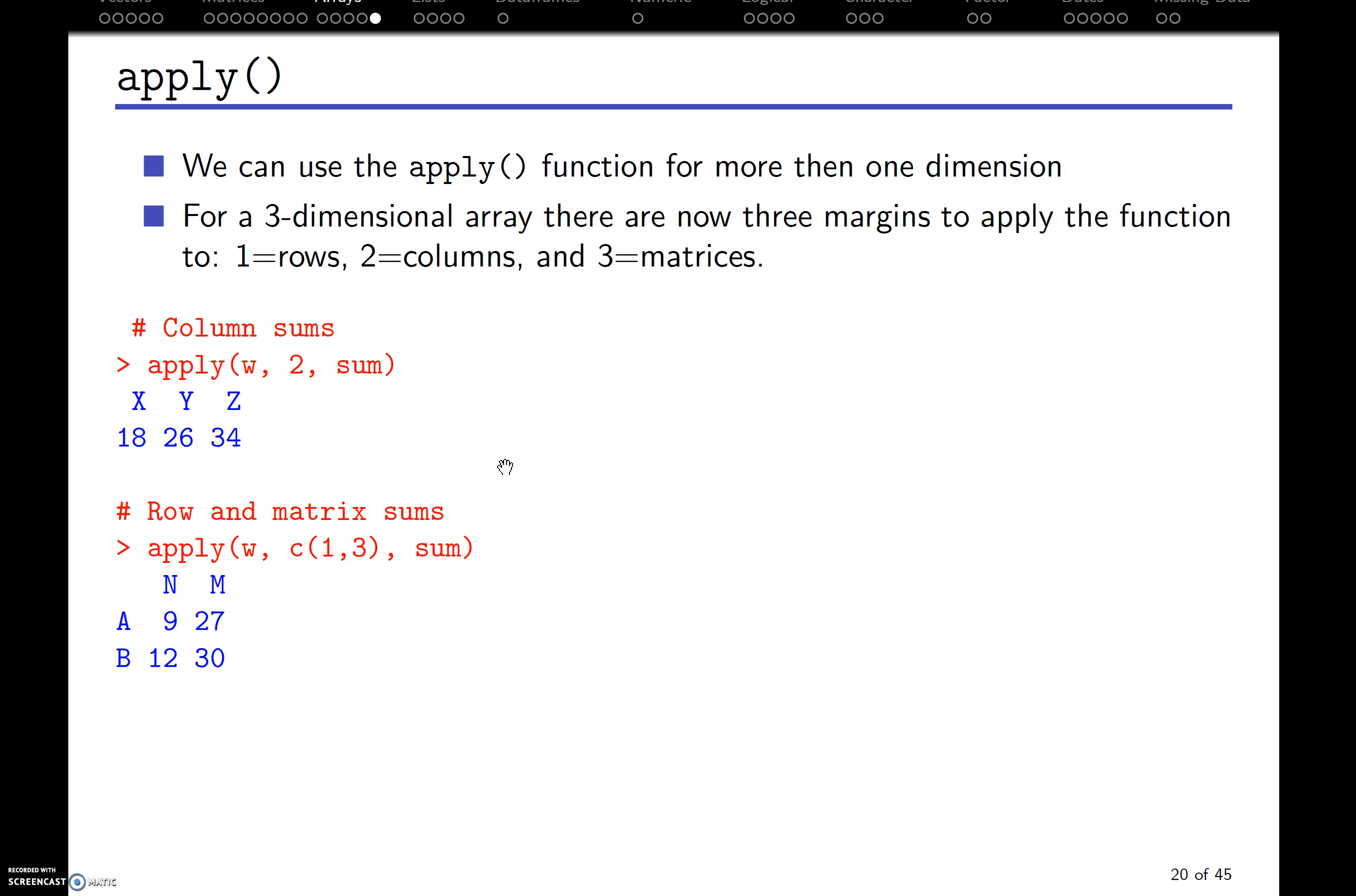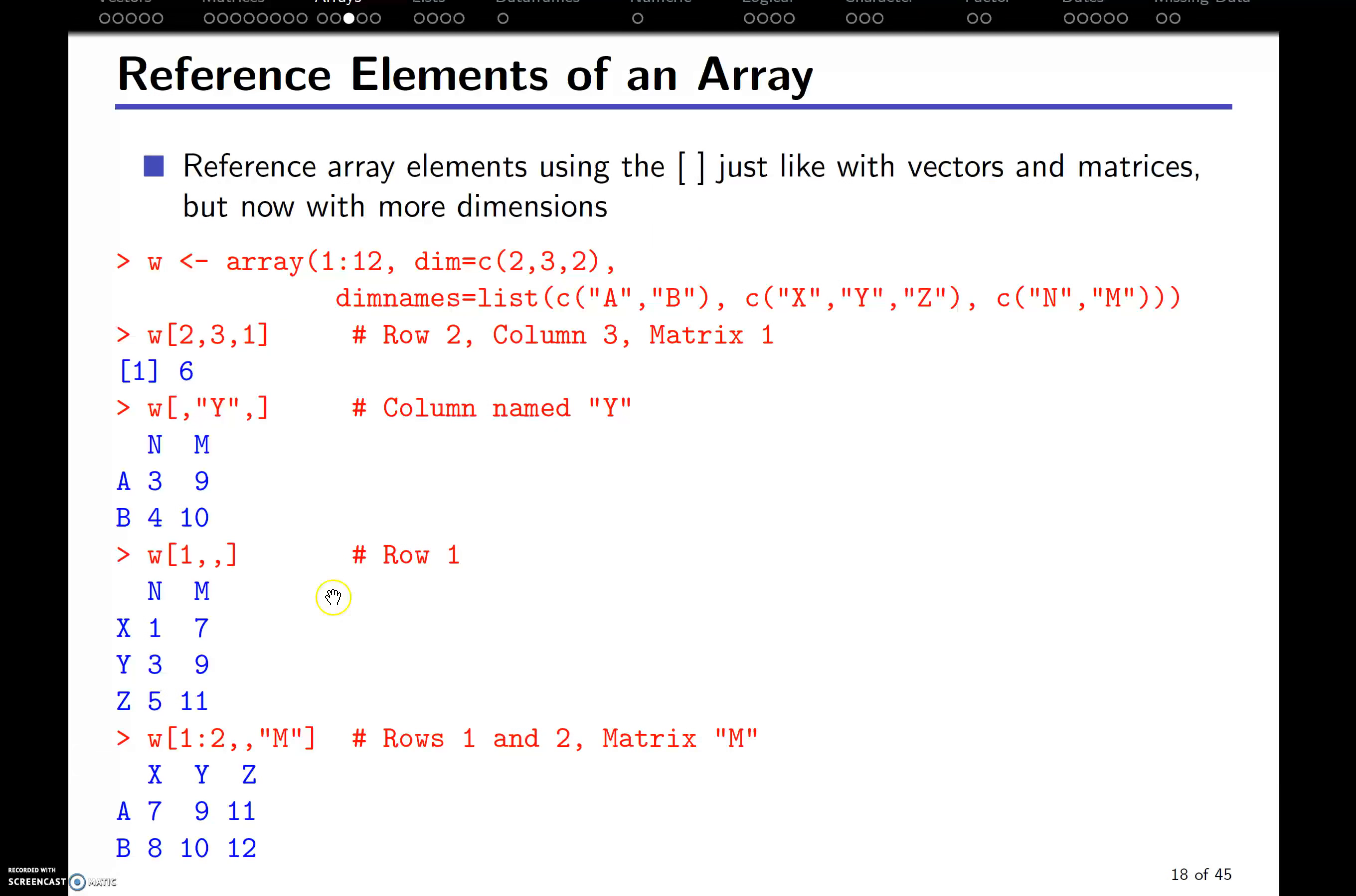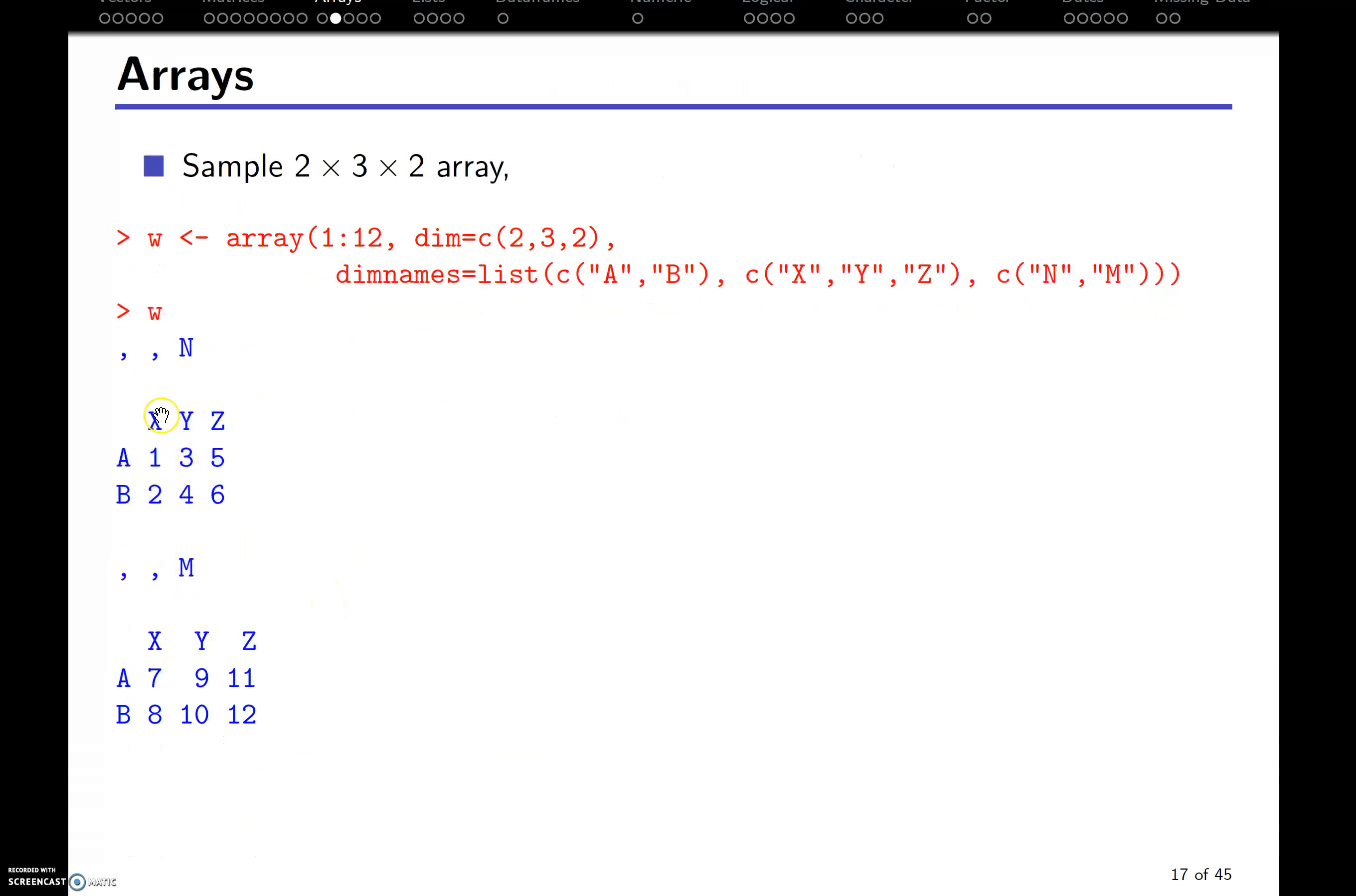Okay, last slide. If we use the apply function in more than one dimension, like for an array like this, the one is still the rows. The two is still the columns. And now three is for across the matrices. So notice here, if we apply and use sums across our columns on W, it's going to go across and get the X column, the Y column, and the Z column sum. So going back to here, so all of these numbers summed in the X column. All of these in the Y, all of these in the Z.